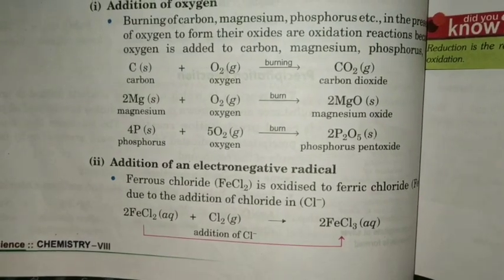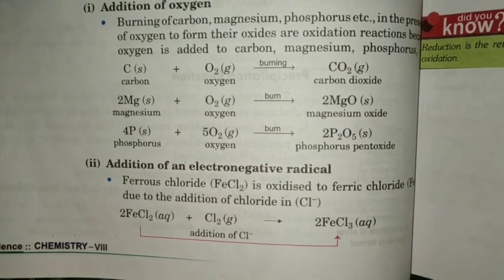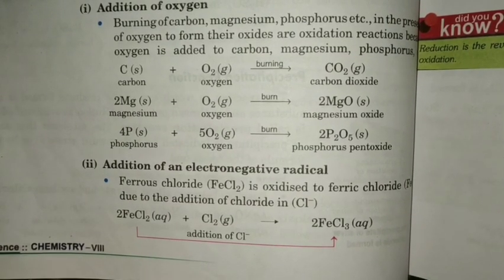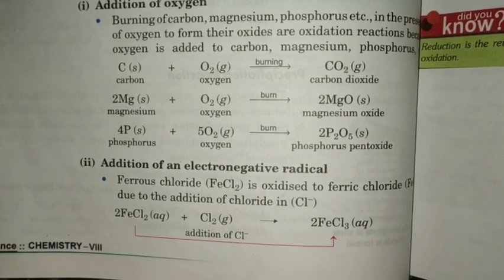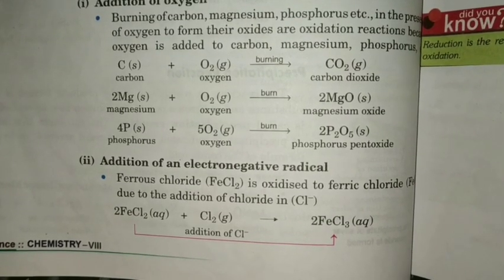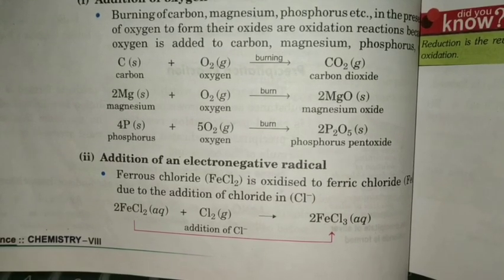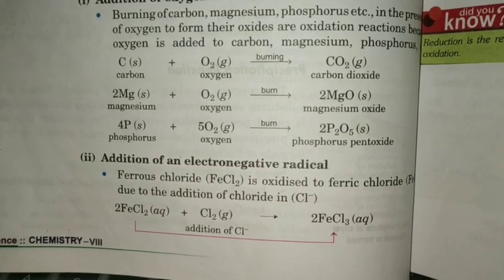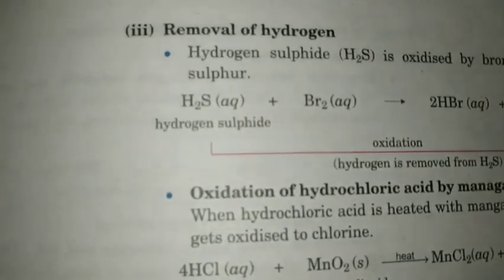Second, addition of an electronegative radical is oxidation. Cl minus is electronegative in nature, and non-metals form electronegative radicals. So chlorine is a non-metal. When you add Cl2 to ferrous chloride, it forms FeCl3 — addition of electronegative radical takes place, so it comes under oxidation reaction. Next example is removal of hydrogen.